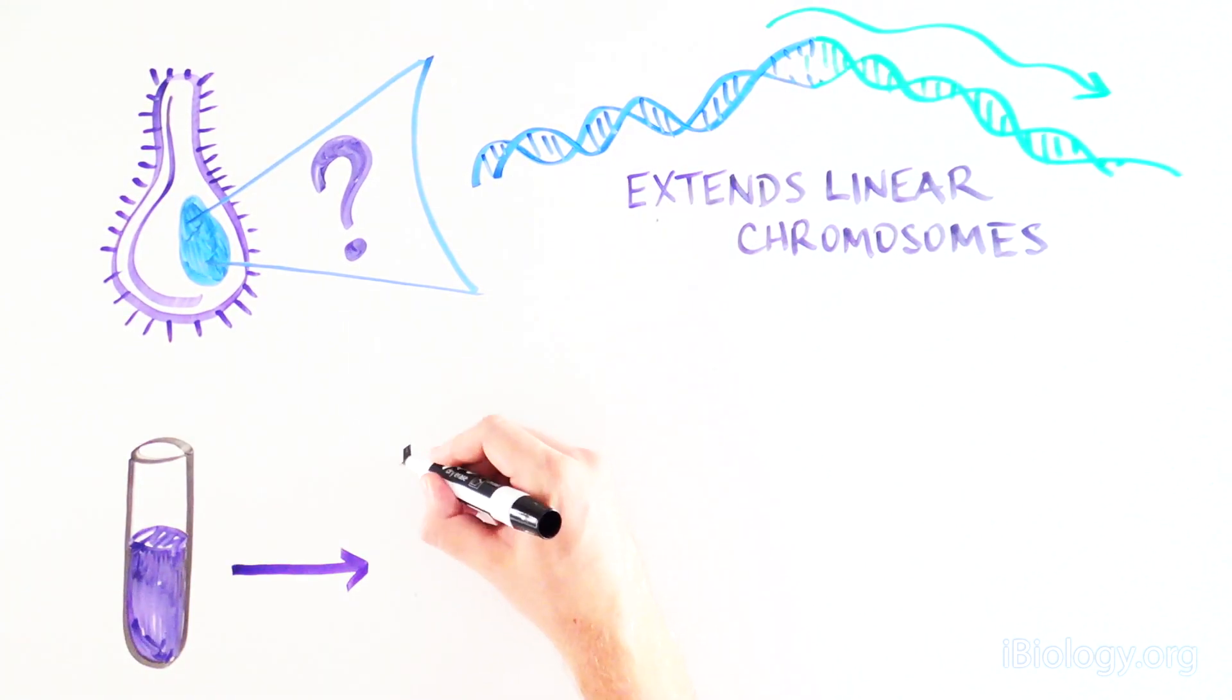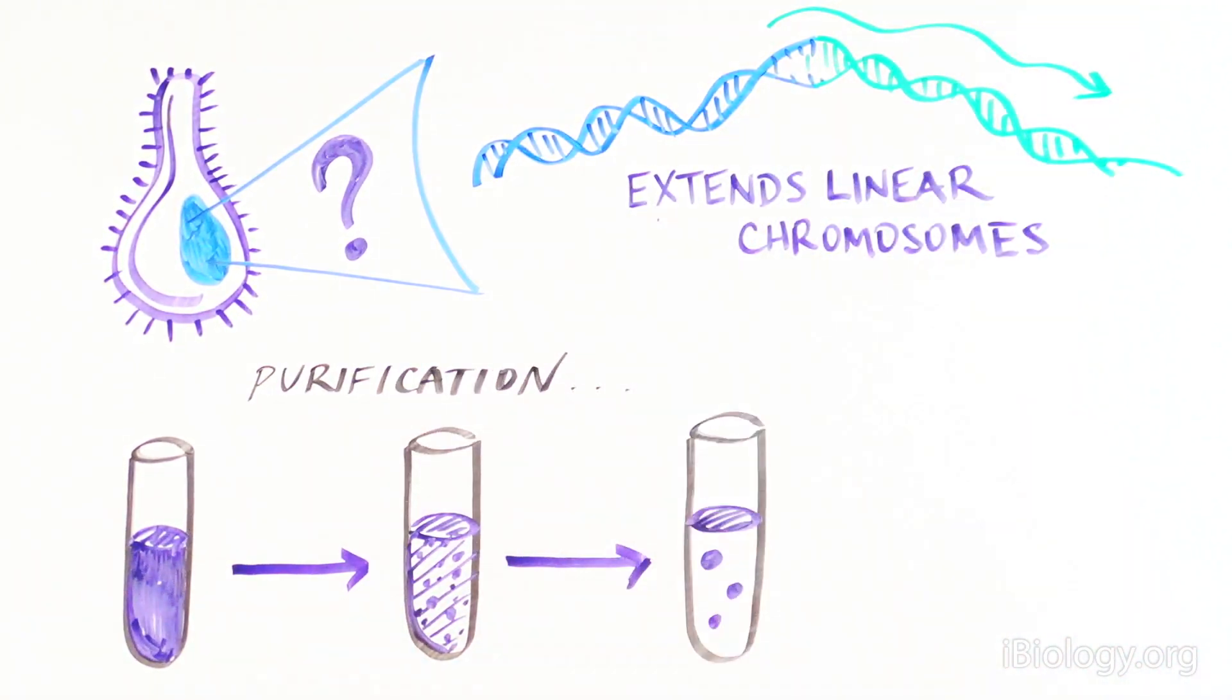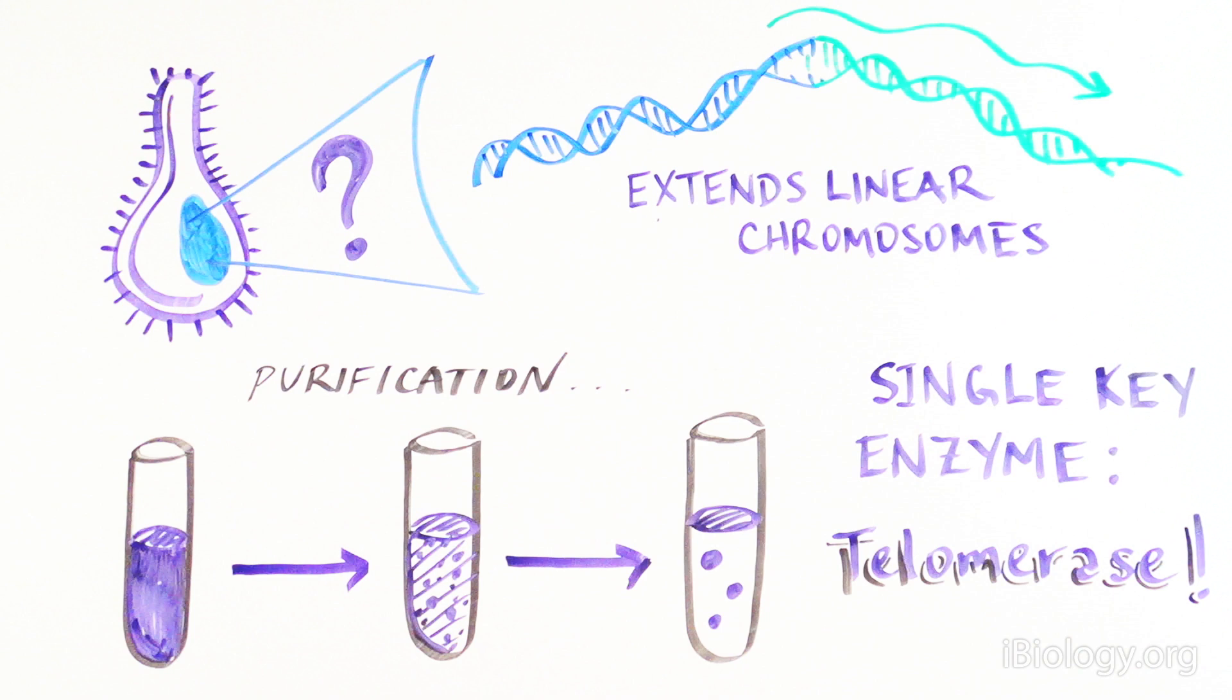By doing multiple rounds of biochemical purification, Elizabeth Blackburn and Carol Greider then went on to show that a single key enzyme is responsible for this. They called this enzyme telomerase, since it produces telomeres.